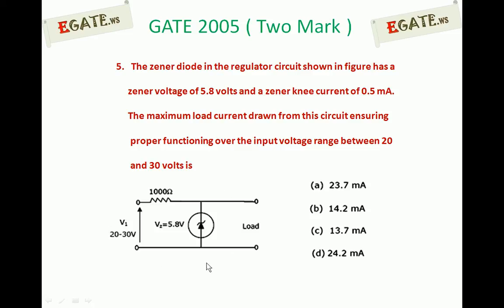And the circuit given is a simple zener voltage regulator. The zener diode in the regulator circuit has a zener voltage of 5.8 volts and a zener knee current of 0.5 mA.